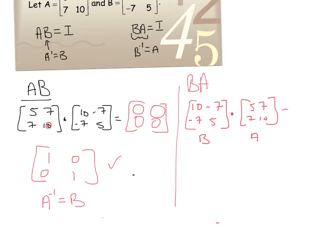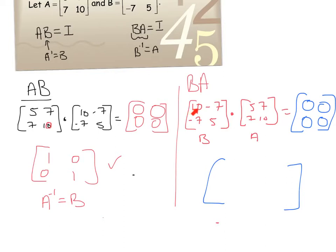I'm going to go through the same thing. I've got my empty shell with the 4 spots. I'm going to work top-down: row 1, column 1 — 10 and 5 is 50, I get a 1. Then row 2, column 1: 7 and 5 is 35 negative, and 5 and 7 positive — opposites, so I get 0. Then row 1, column 2 — multiply and add, and I get 0.